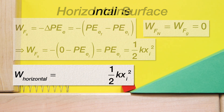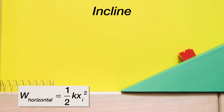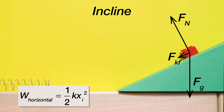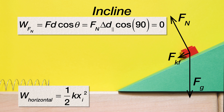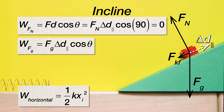Now let's move on to the work done on the block while it is on the incline. Again, we need to draw a free body diagram. The force normal is perpendicular to the incline and up, the force of gravity is straight down, and the force of kinetic friction is parallel to the incline and opposite the direction of motion of the block, so the force of kinetic friction is down the incline. The work done by the force normal is zero because the angle between the force normal and the displacement of the block is 90 degrees. The work done by the force of gravity equals the force of gravity times the displacement of the block in the parallel direction times the cosine of the angle between those two directions — labeled theta 1 — which is the angle between the displacement up the incline and gravity straight down.